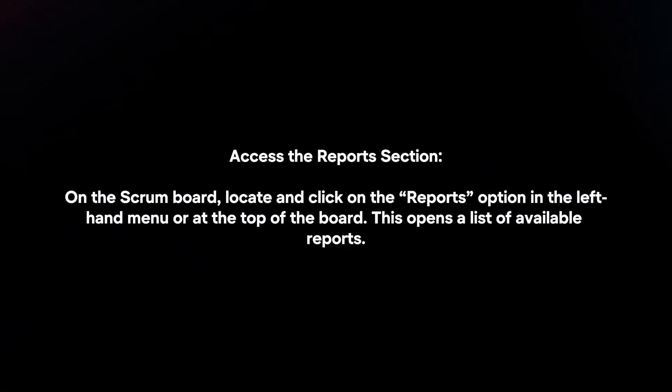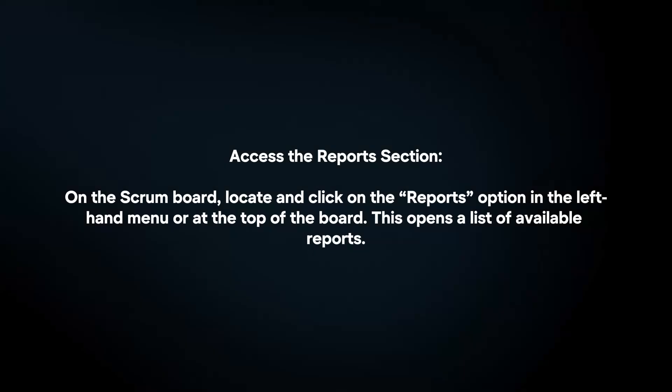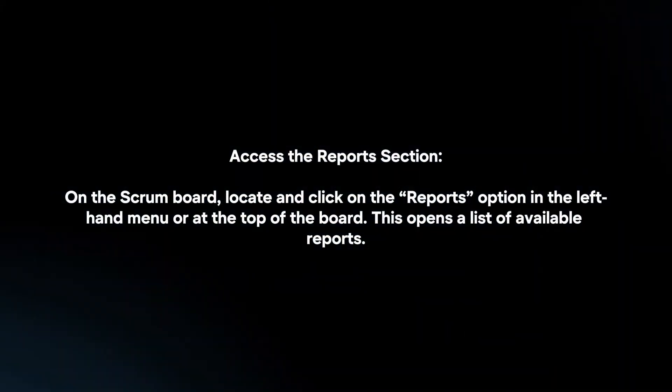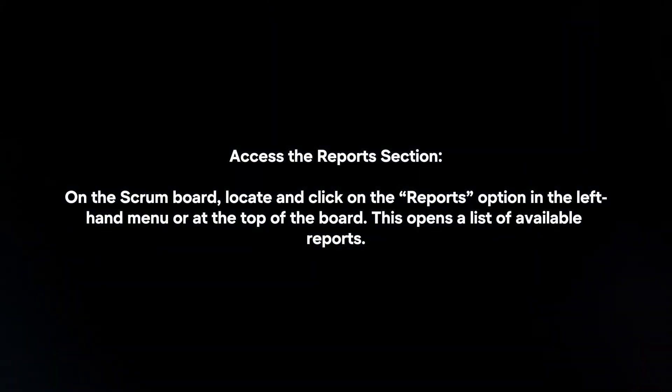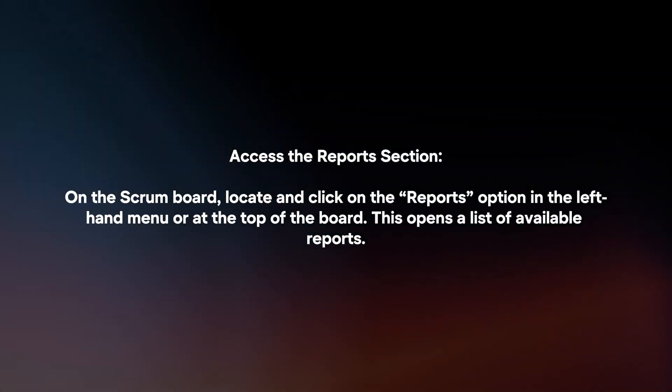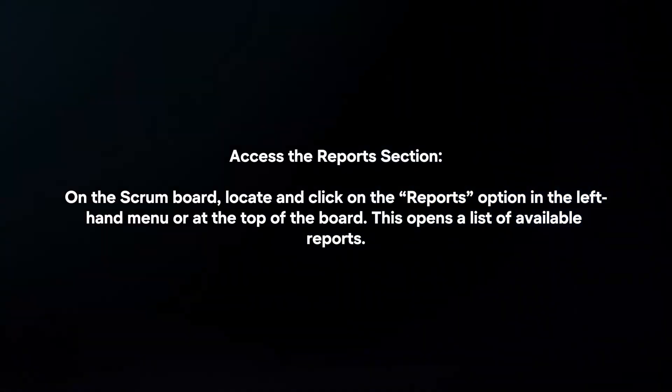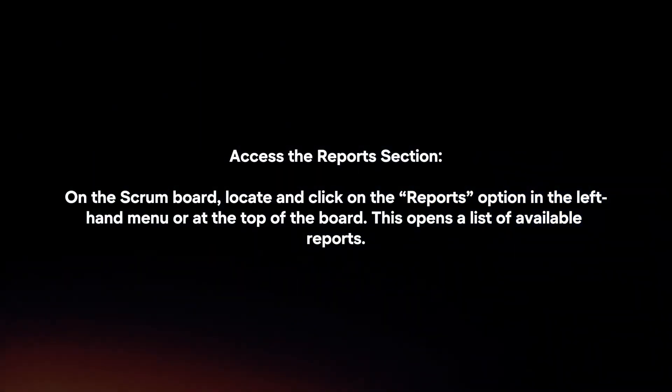Access the Reports section. On the Scrum board, locate and click on the Reports option in the left-hand menu or at the top of the board. This opens a list of available reports.